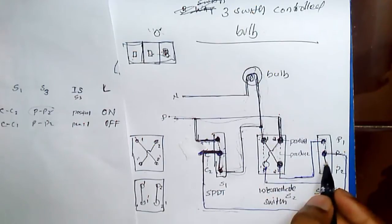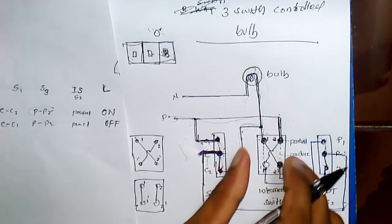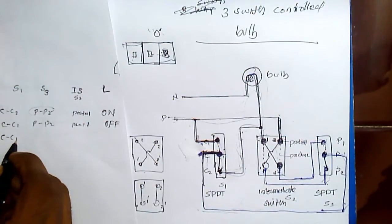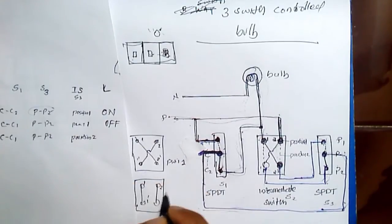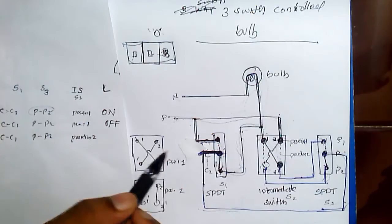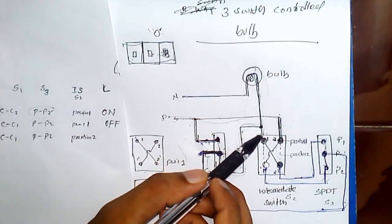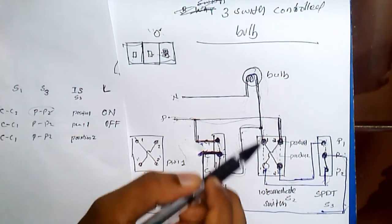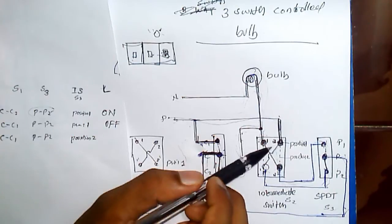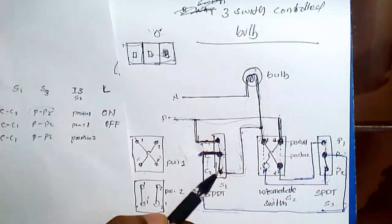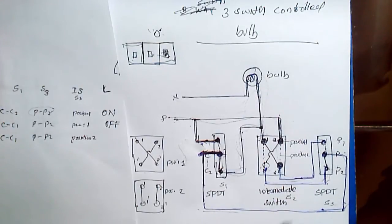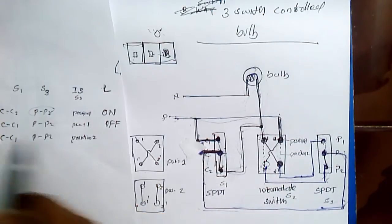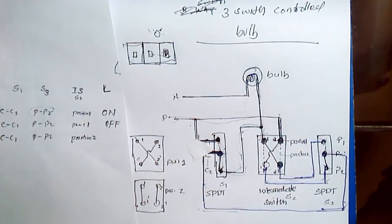In the second case, if we change the intermediate switch to the second position, we have CC1, PP2, and position two. With position two, we have contacts two–two-dash and one–one-dash making contact. The face comes through two–two-dash and one–one-dash, then to P2. From P2 there is a connection to P, and P comes through C to C1. The circuit is complete and the lamp is on.